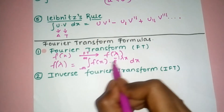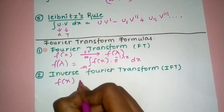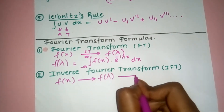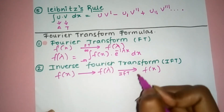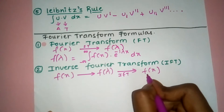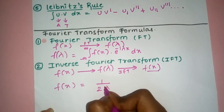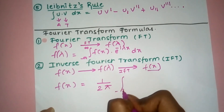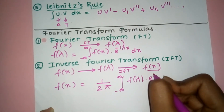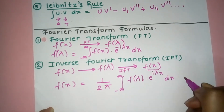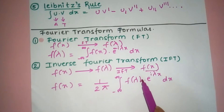Now we have the Inverse Fourier Transform (IFT). When we have F(λ) and want to convert it back to f(x), that is the inverse Fourier transform. The formula for f(x) is: f(x) = (1/2π) · integral from minus infinity to infinity of F(λ) · e^(iλx) dλ. Note that in the forward formula we had a minus sign in the exponent, but here we do not.